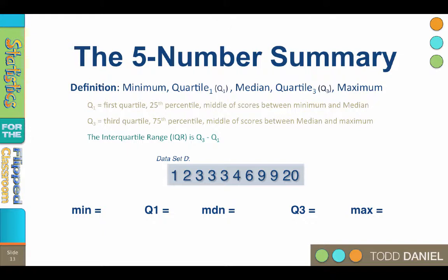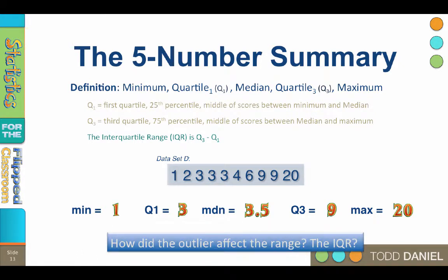Using data set D and what we have just learned about the interquartile range, we can see that the minimum is 1, quartile one is 3, the median is 3.5, quartile three is 9, and the maximum is 20.